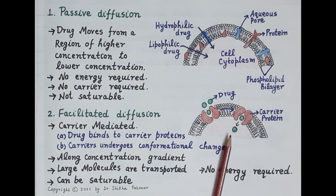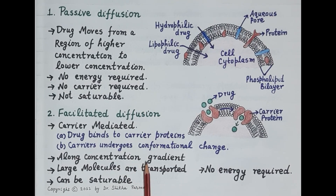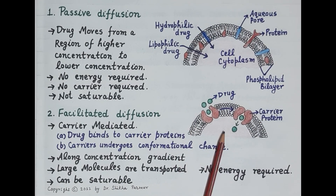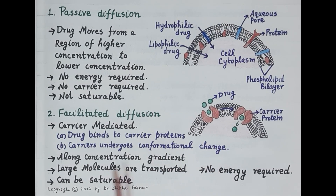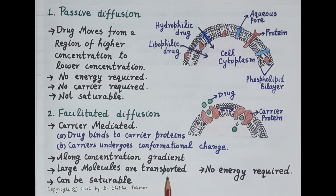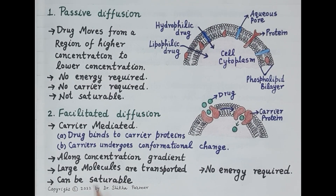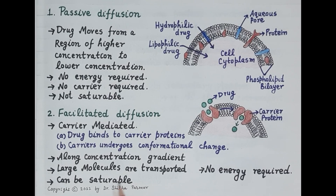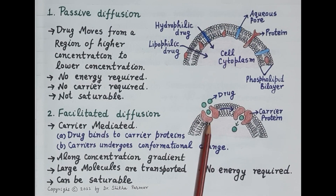In facilitated diffusion, similar to passive diffusion, the drug is transported along the concentration gradient — from higher to lower concentration — and transportation does not require energy. Large molecules are transported by this process. Unlike passive diffusion, facilitated diffusion is saturable because transportation requires the availability of carrier proteins.